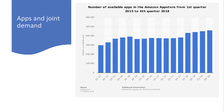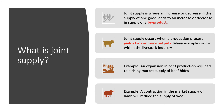So what is joint supply? Joint supply is where an increase or decrease in the supply of one product leads to an increase or decrease in the supply of a byproduct. Joint supply happens when a production process yields two or more distinct outputs.